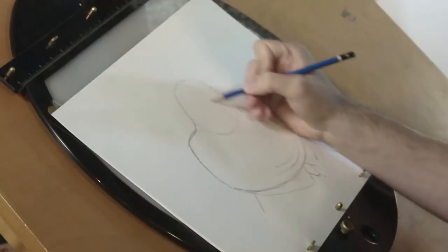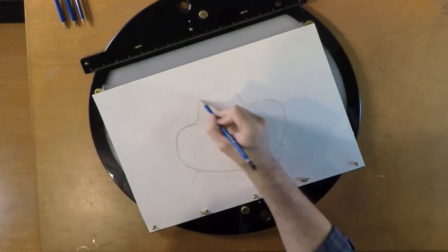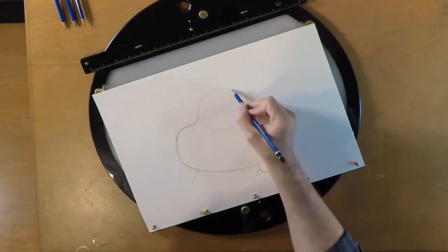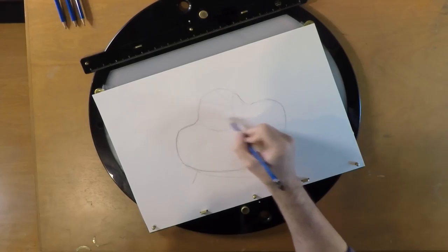Now if we draw this line down the center of the basketball, draw one across and draw this little V right here. This is where Klawhauser's eyes are going to sit and this is where his nose sits.